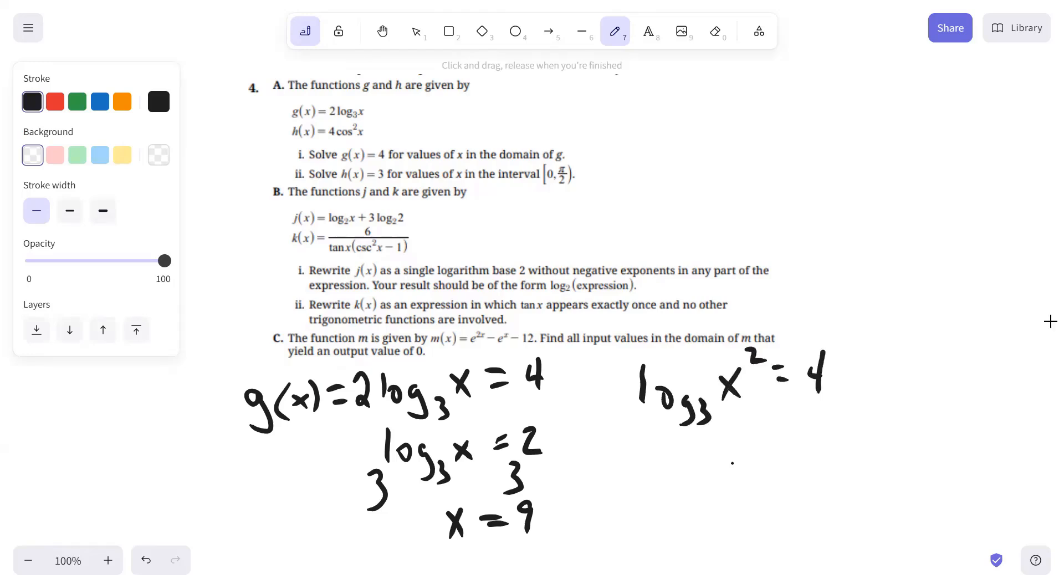So if you did it the other way and you had log base three of X squared using the power property equals four, exponentiate both sides by three, then you would have X squared equals three to the fourth, which is 81. Then you would take the square root, and typically when you solve an equation and you take the square root, you have to account for the plus or minus. However, the domain of this function has to be a positive value, so that would eliminate negative three. So X equals three only.